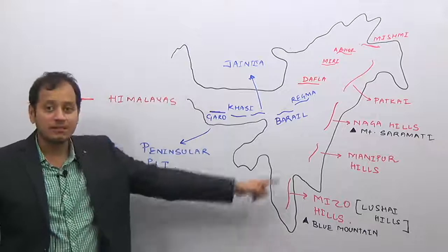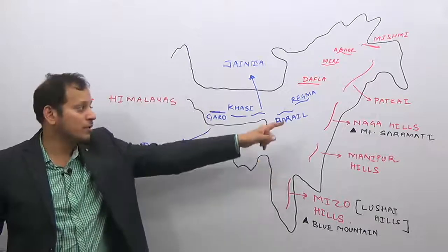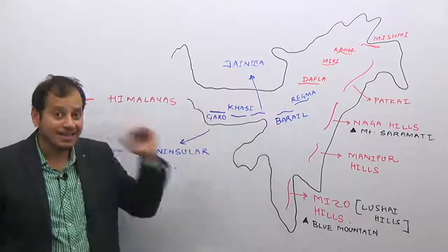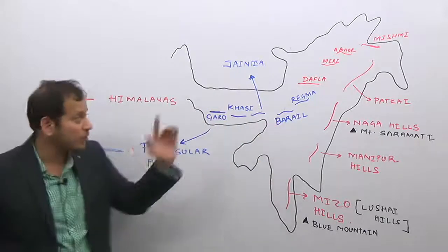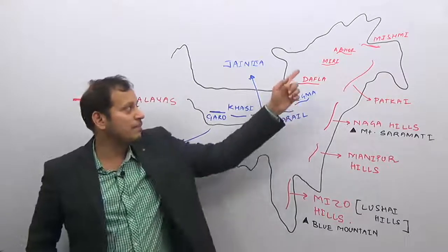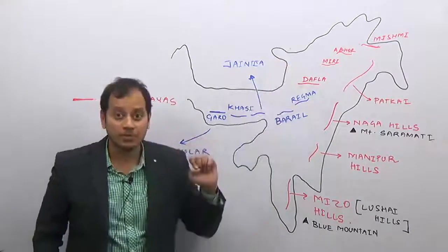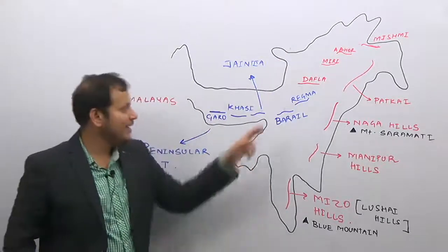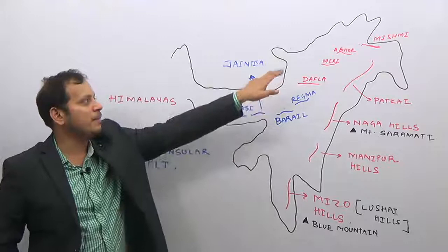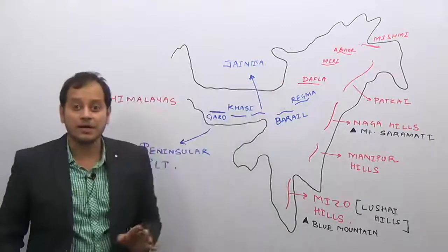South to North: Mizo, Manipur, Naga, Patkai. Another potential question — South to North: Dafla, Miri, Abhor, and Mishmi. Or: Barel, Rengma, Dafla, Miri, Abhor, and Mishmi. Draw this diagram in your notebook or on paper and stick it on your study table, or revise it until it gets into your head.